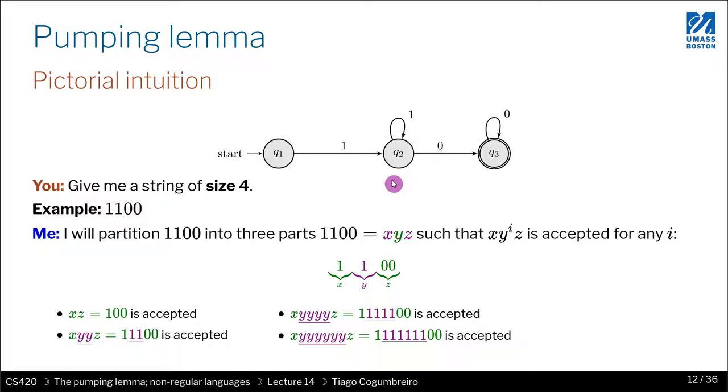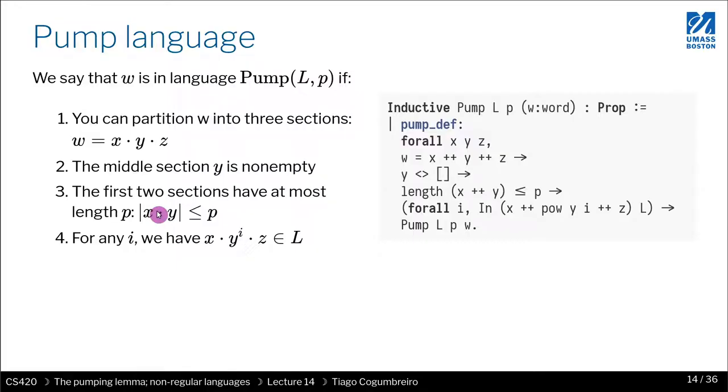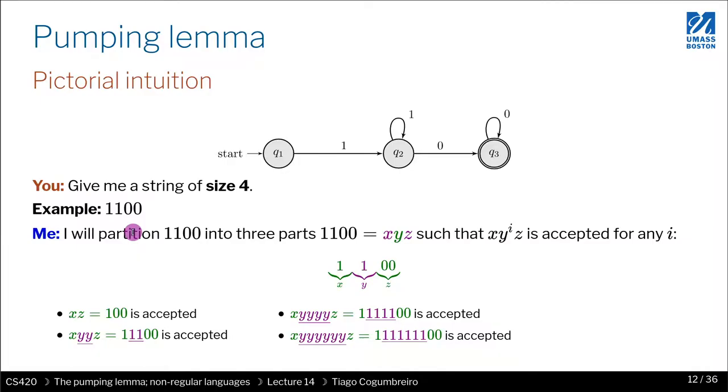And it's because 1100 is in pump of L that means that for any i, I can pump this Y as many times as I want.